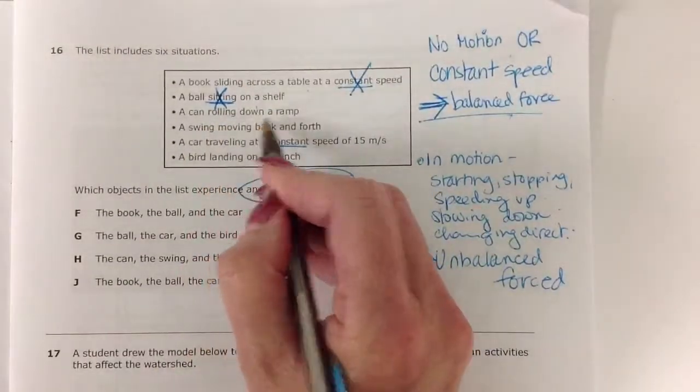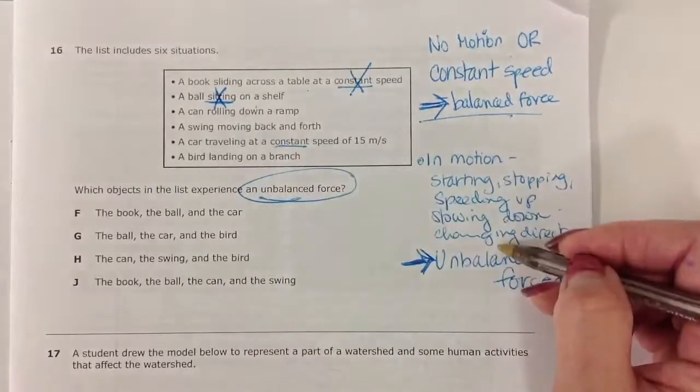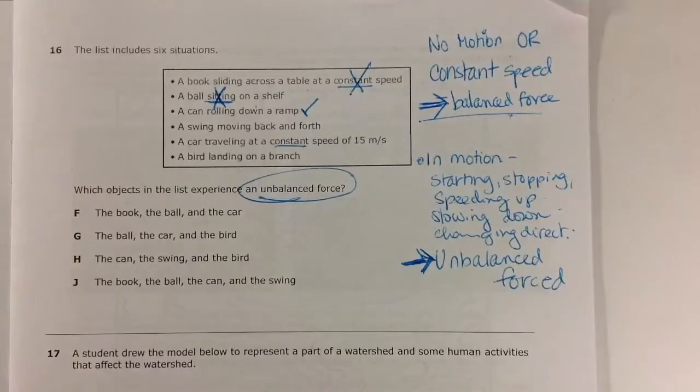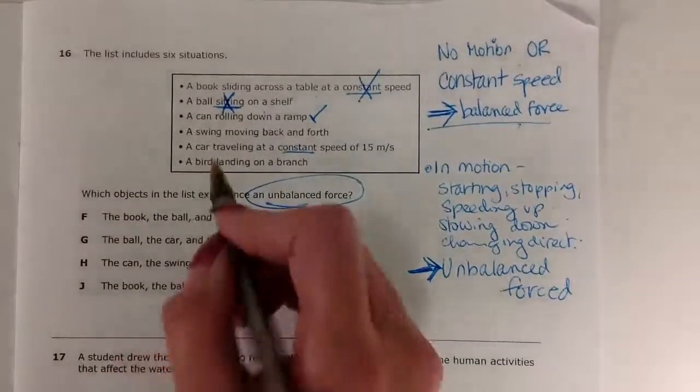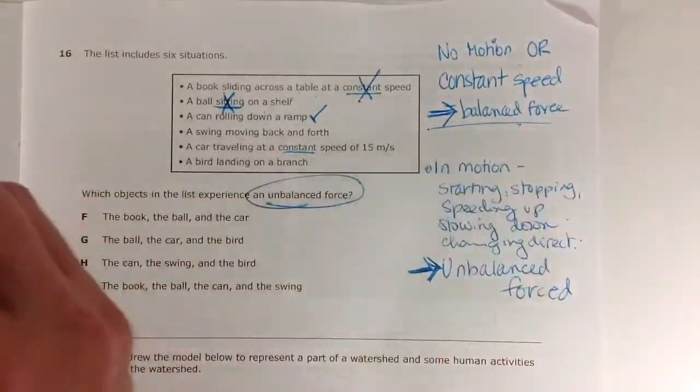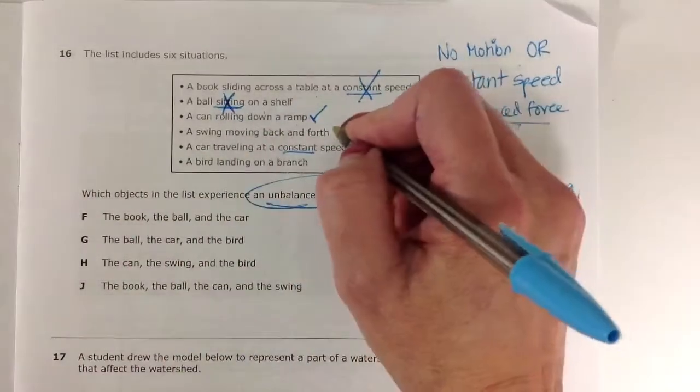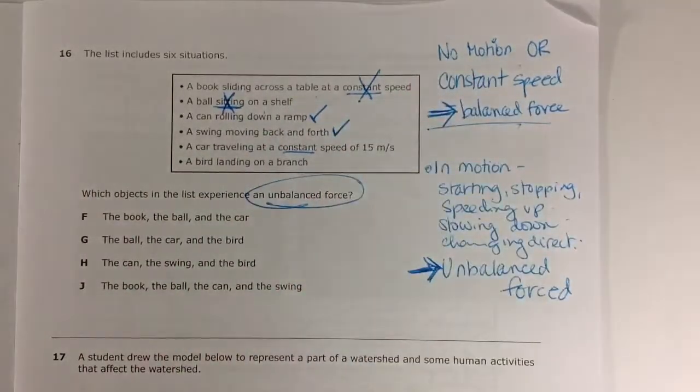A can rolling down a ramp. It is rolling down a ramp, probably speeding up. It is definitely an unbalanced force. A swing moving back and forth. It's changing direction, speeding up, slowing down, all of that good stuff, yes.